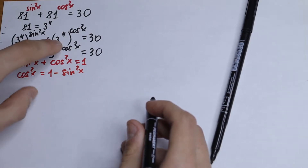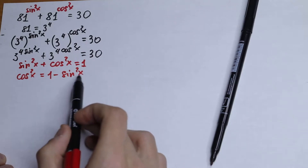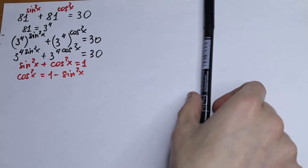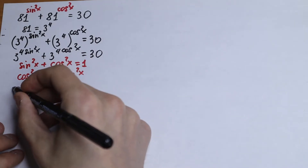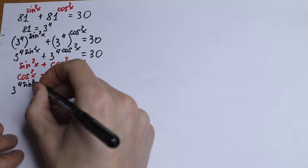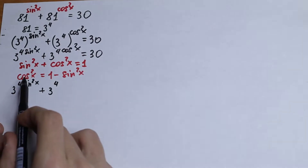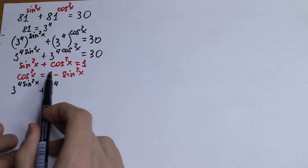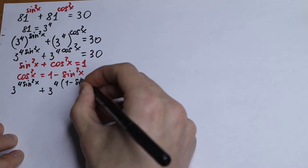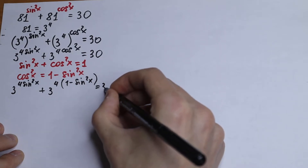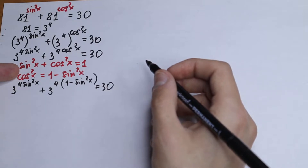We substitute cos²x with 1 − sin²x. So we will have 3 to the power 4sin²x, plus 3 to the power 4 times (1 − sin²x), equal to 30. Just remember the main trigonometric identity and the exponent rule.